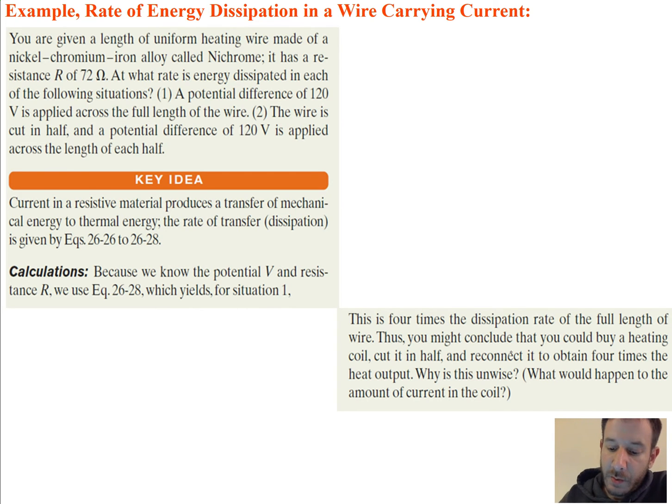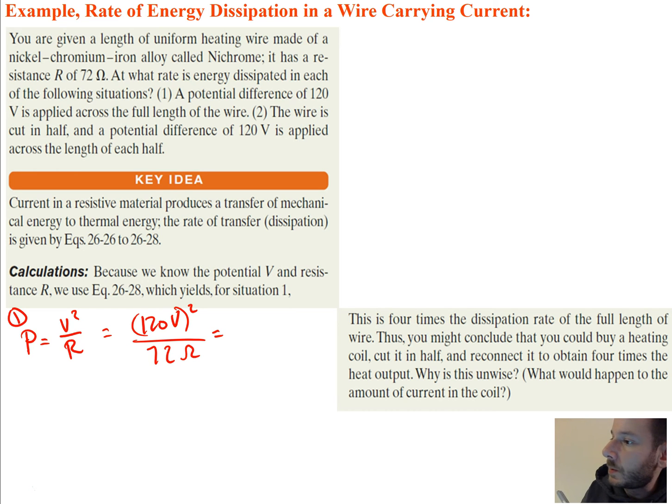So we know that the potential V and the resistance are, so we're going to use an equation that has those variables in it. So our power is just going to be equal to V squared over R, and this is for the first situation. So we're given 120 volts squared divided by our resistance, which we know is 72 ohms. So that's equal to roughly 200 watts.